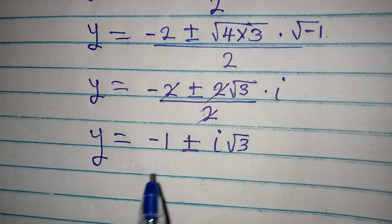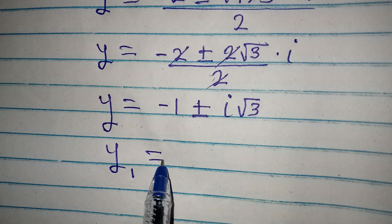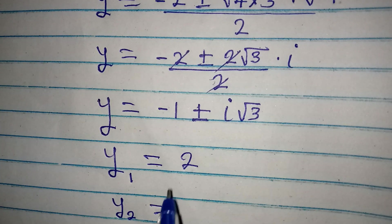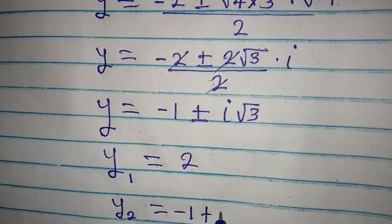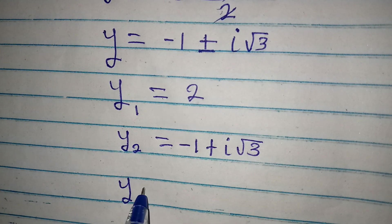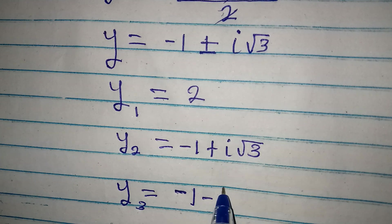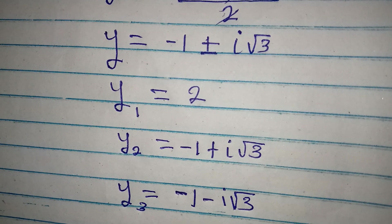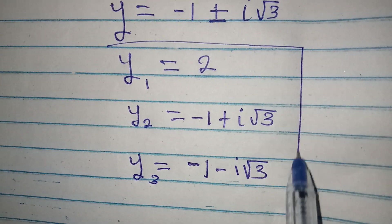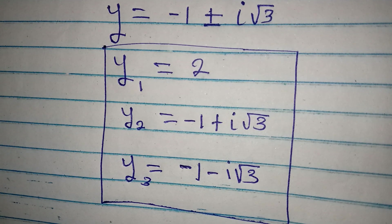Bringing the three solutions together: y₁ = 2, y₂ = -1 + i√3, and y₃ = -1 - i√3. These are the three complete solutions to the equation. Remember, the question directed us to solve completely, so all three solutions are required.